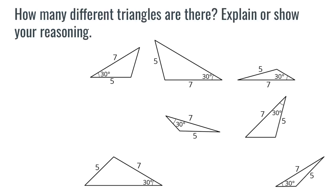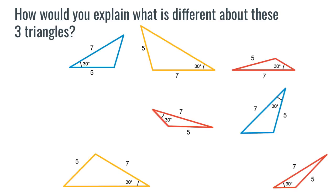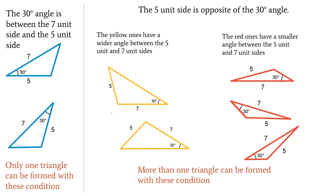How many different triangles are there? Looking at it, there seem to be three sets of triangles in this case: the blue ones, the two yellows, and the reds. The blue triangles have the 30-degree angle in between the seven and the five unit sides, and therefore only one triangle can be formed with these conditions.